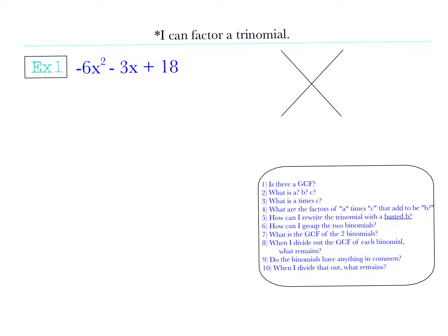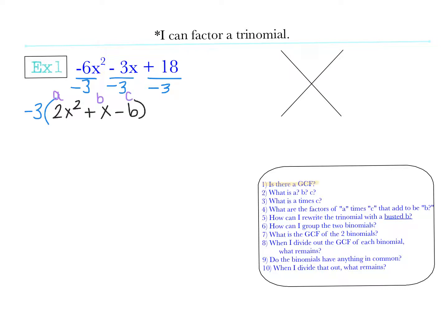I'm going to work through this first example using those guiding questions. The first thing I ask is: is there a GCF? My coefficients are negative 6, negative 3, and 18. The first term always needs to be positive, so I know I'm taking out a negative, and 3 can go into all three of those values - so I'm going to take out a negative 3. When I divide that negative 3 out, I'm left with 2x squared plus 1x minus 6. My next question is: what is A, B, and C? A is 2, B is 1, and C is negative 6.